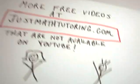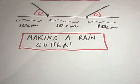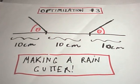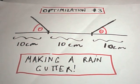Alright, so in this video we're going to do another optimization problem, the third one that I have should be floating around, and the idea in this one is we're making a rain gutter.